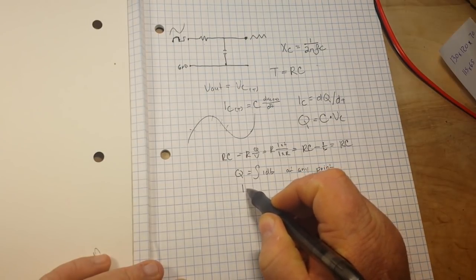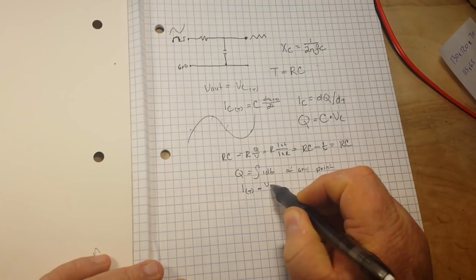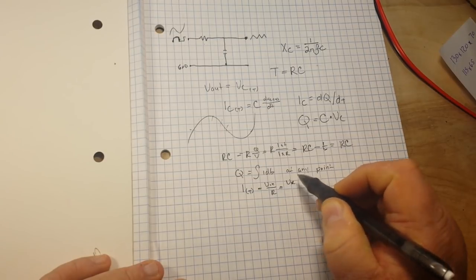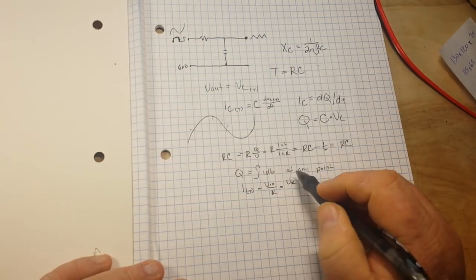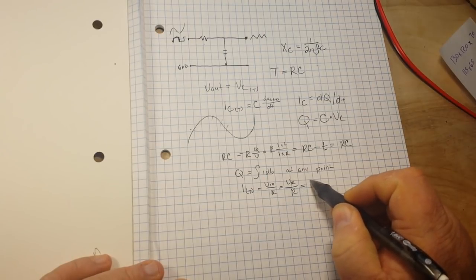So now we can say that the current at some point in time is equal to Vn over R. It's also equal to Vr, the voltage of the resistor, over R, and our capacitance,